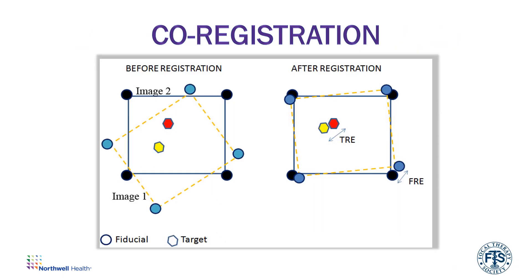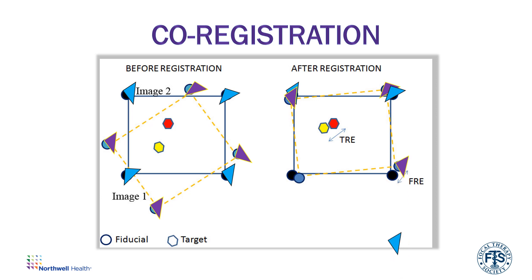This is a simpler cartoon showing two data sets on your left. Before registration, you can see there are unique triangles in blue and purple, and we want to align these to target a specific area in the prostate. Our two targets are denoted in the red and yellow hexagons. After co-registration, you can see the triangles align and our targets are much closer together. There's always a slight error between the two data sets.